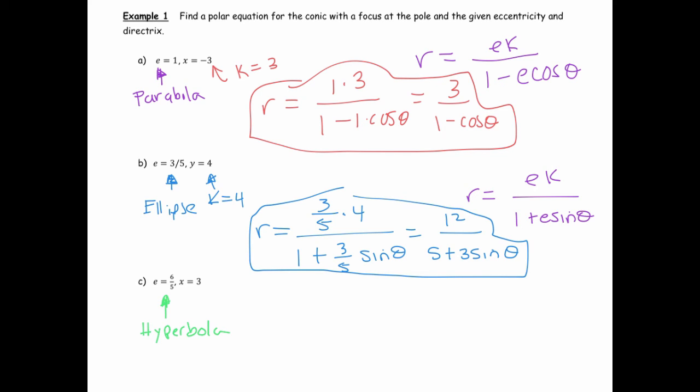Since x = 3, that means I'm looking at something of this form. It's a positive k value, so it's going to be a cosine one. Again, this tells me k is 3.